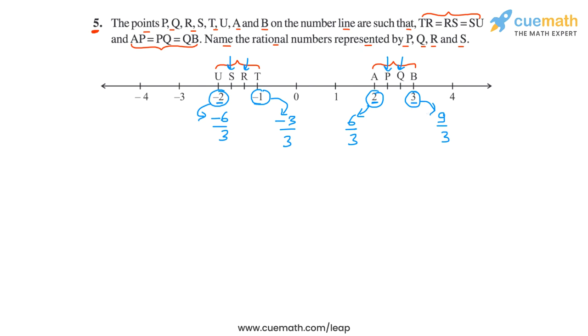Now, let's determine P and Q. Since A, this point here, is 6 by 3, and B, which is this point here, is 9 by 3, and P and Q divide this interval from A to B into three equal parts,